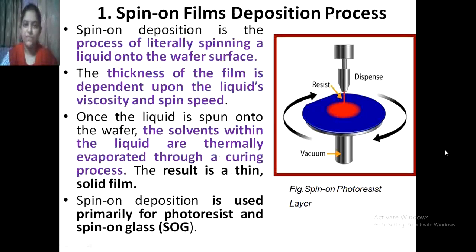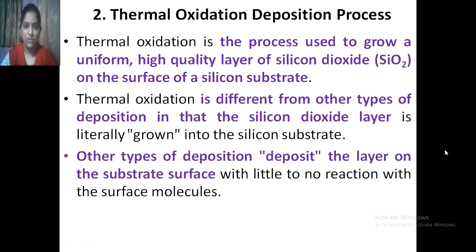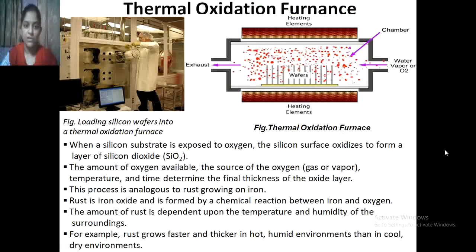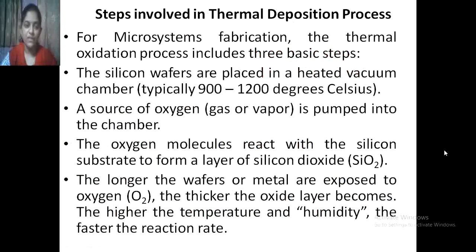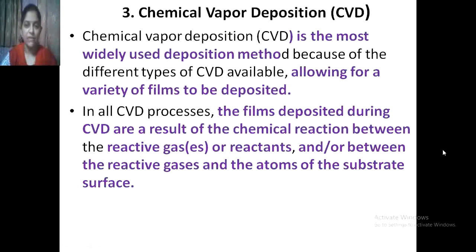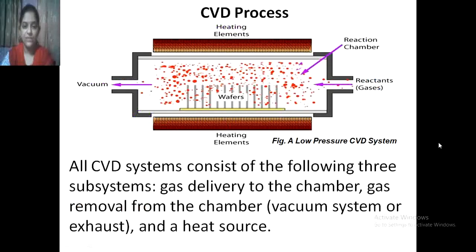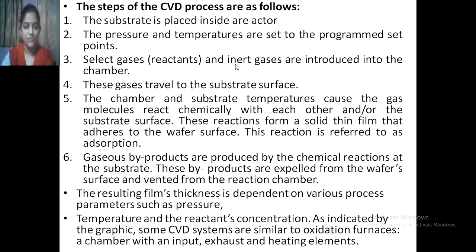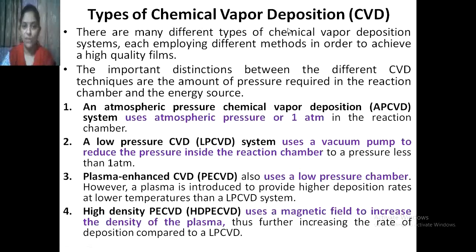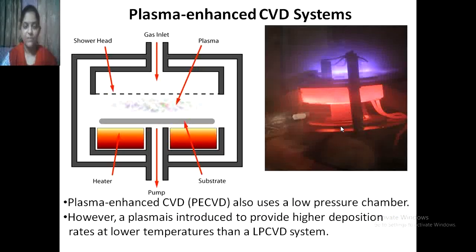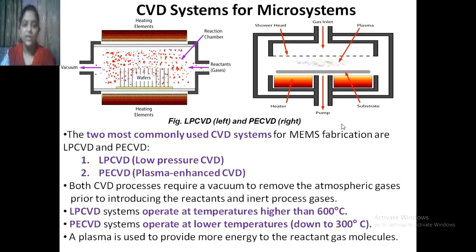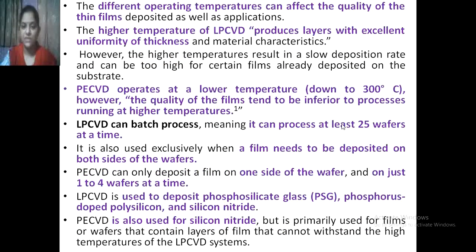In the deposition process, we saw spin-on films deposition, thermal oxidation deposition process, thermal oxidation parameters, the steps involved in thermal deposition, chemical vapor deposition (CVD), what is meant by homogeneous and heterogeneous, the CVD process steps, types of CVD including atmospheric pressure CVD, low pressure CVD, plasma enhanced CVD, high density CVD, the plasma enhanced CVD system, and the differences between low pressure CVD and plasma enhanced CVD.